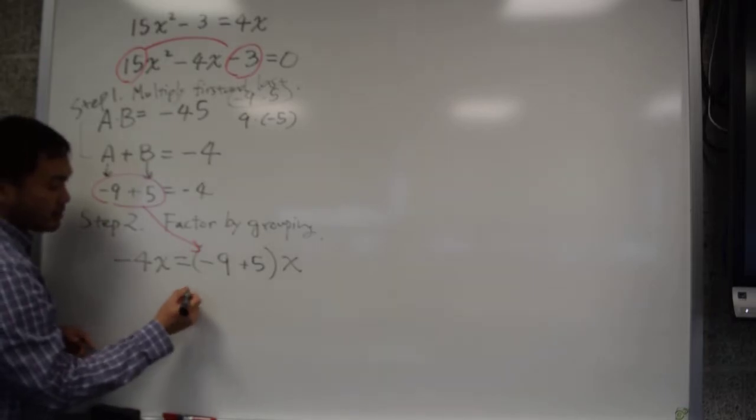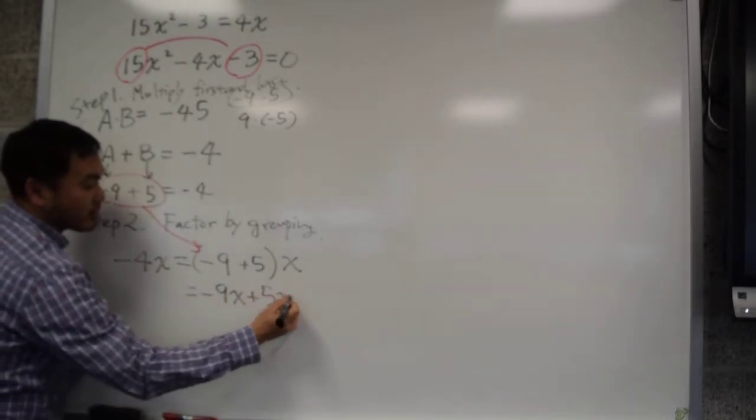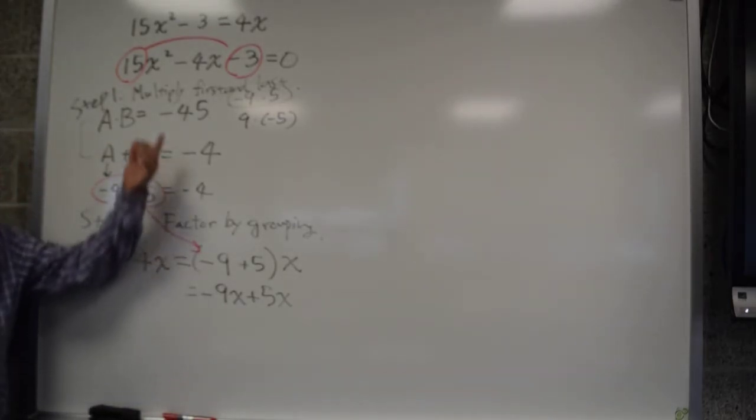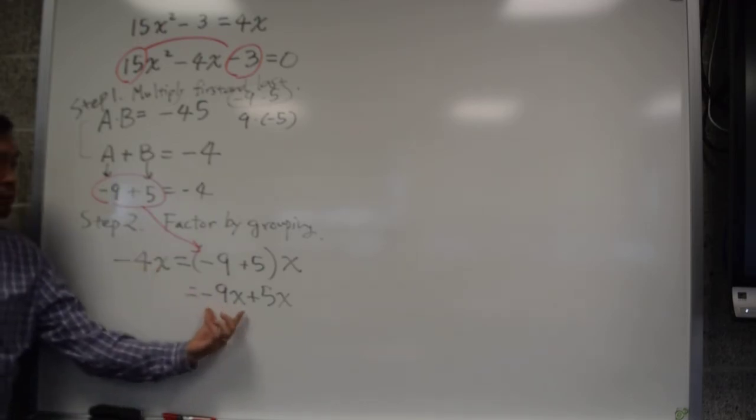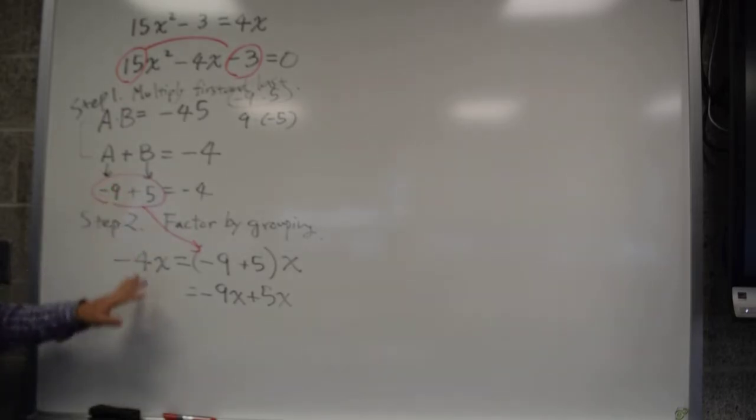And that's same as negative 9x plus 5x, right? So what you do is you take the middle number and you split it into two parts according to what you found out in step one.